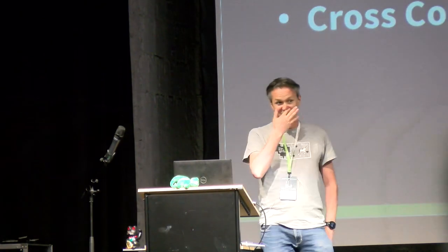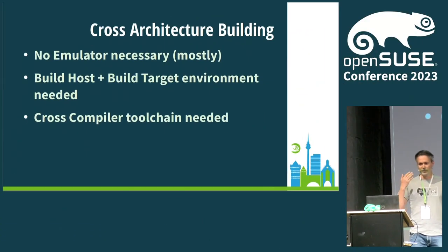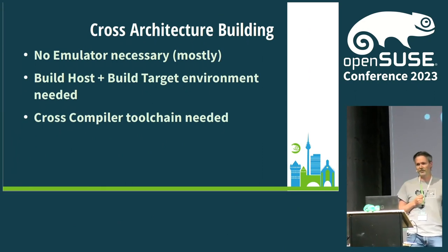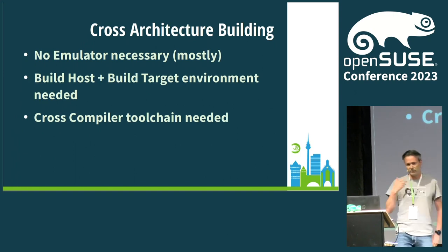Welcome to my talk about cross-architecture building. Just to be clear about what's new here: in the old days we built the ARM distribution using QEMU Linux user emulation, running on an x86 host and emulating basically everything, then replacing some parts like the compiler backend with native builds for speed.